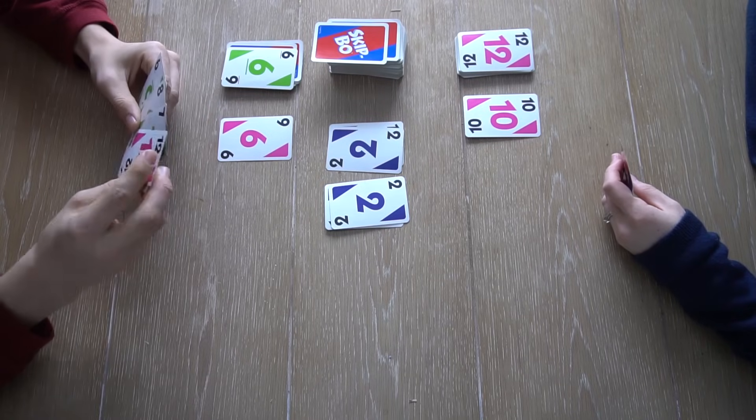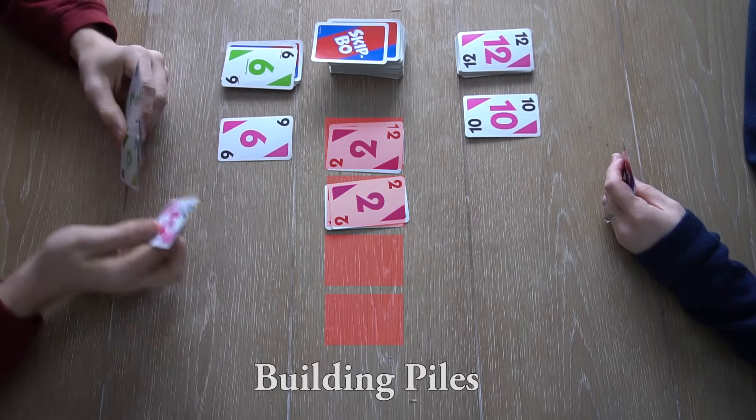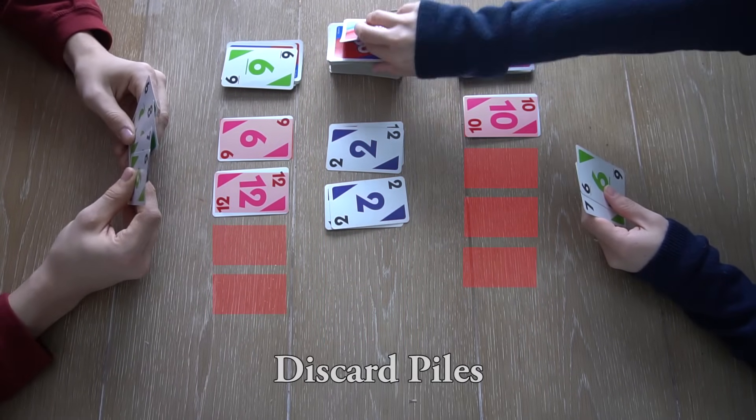The maximum amount of building piles that can be started is four, and those will be in the center. The maximum discard piles each player can have is also four.